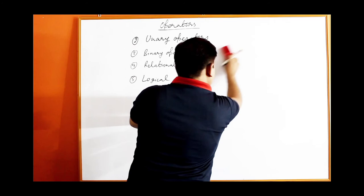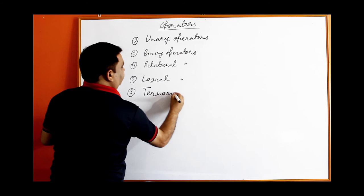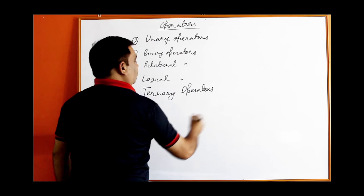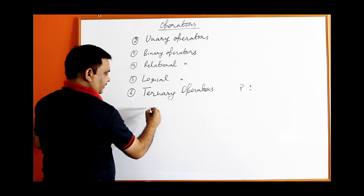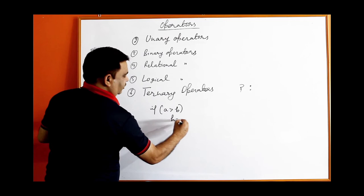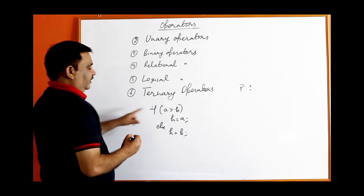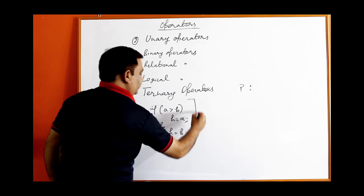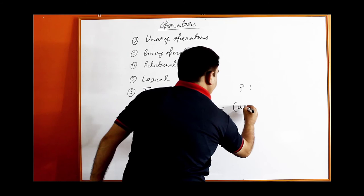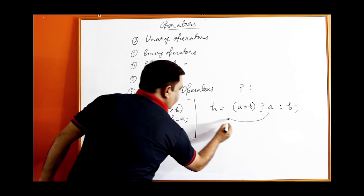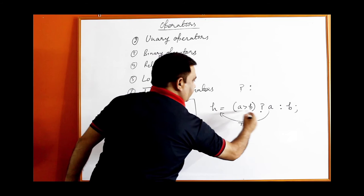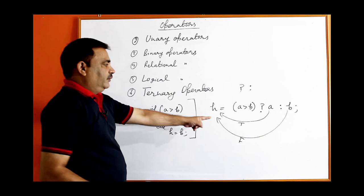The ternary operator uses question mark and colon. It has two operators and three operands. Instead of writing: if (a > b) h = a; else h = b; you can write: h = (a > b) ? a : b; — if the condition is true, the value of a is assigned to h; if false, the value of b is assigned to h. The ternary operator can replace the if-else statement.